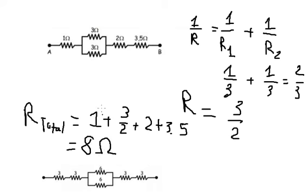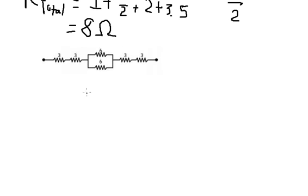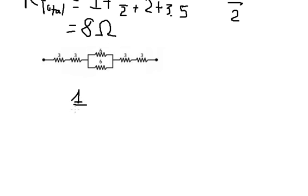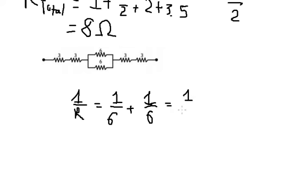For question number two, we do the same. We see that this is about parallel, so we have one over R equals one over six plus one over six. We calculate this and we get one over three, so R here should be equal to 3.